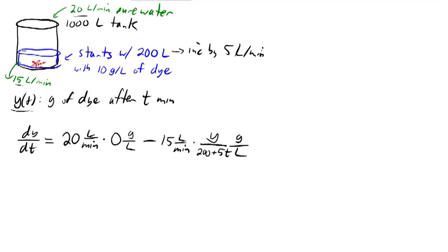So, simplifying this down, we've got dy/dt equals 20 times 0 is 0. Here, we have negative 15y over 200 plus 5t. That's my differential equation.